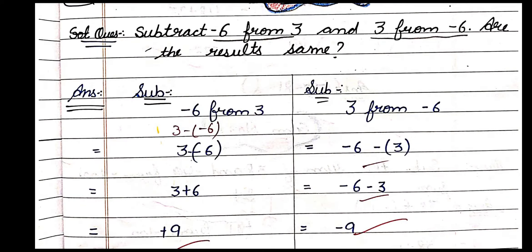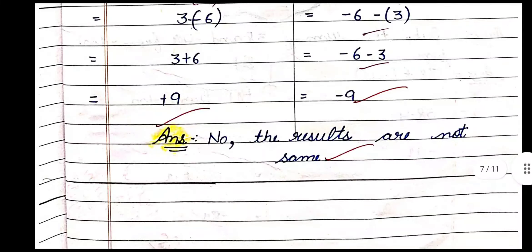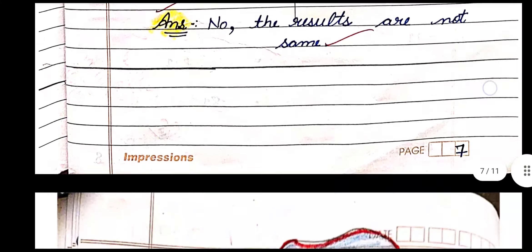Subtract minus 6 from 3, and 3 from minus 6 — two separate sums. For 'minus 6 from 3': we take 3 first, then subtraction sign, then minus 6 in a bracket. Minus minus becomes plus, so 3 plus 6 equals 9. For '3 from minus 6': minus 6 minus 3 — same sign, add — answer is minus 9. Both answers are not the same.